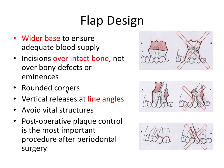You want the corners of the flap to be rounded, not sharp. Vertical releases should occur at the line angles of their respective teeth. The ideal area for the flap margin to contact the tooth is right at the line angle. If you did it in the middle of the papilla, you'd cause loss of that papilla and formation of black triangles. If the edge came into the mid-facial surface, that would often cause noticeable gingival recession. So you don't want mid-facial or mid-papilla — you want right at the line angle.